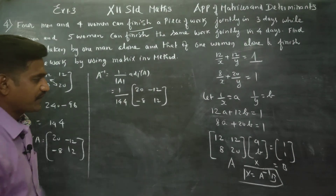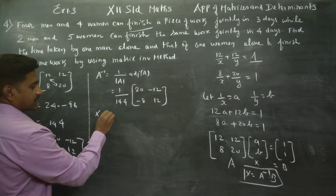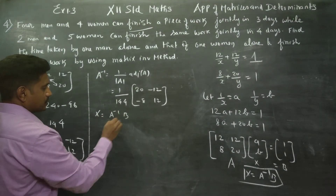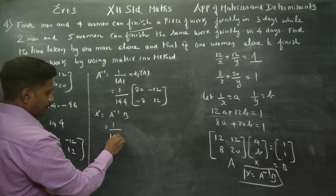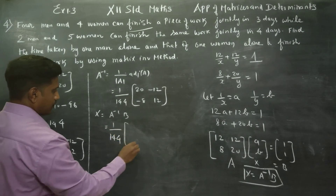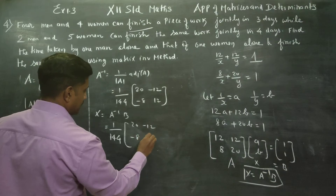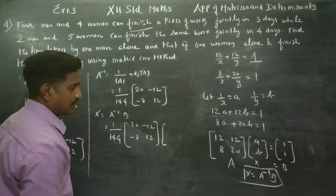We need to find the value of X. X equals A inverse into B. So X equals 1 by 144 into the matrix [20, -12; -8, 12] into B.